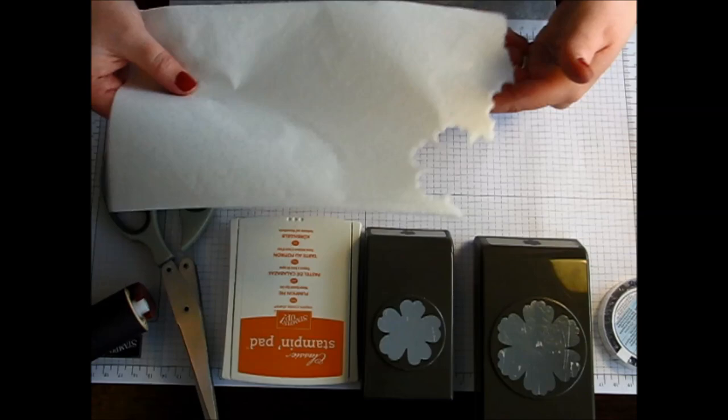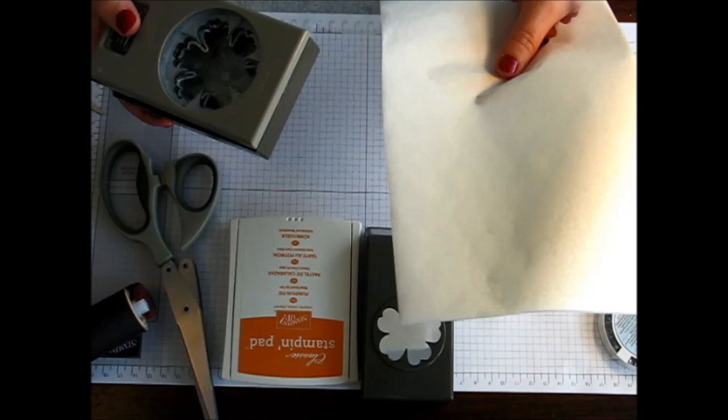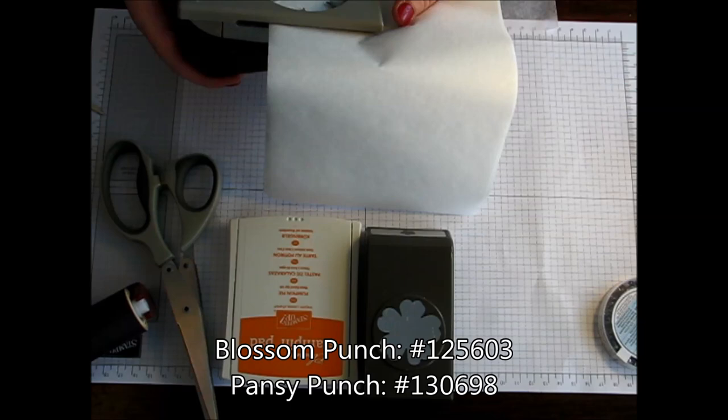I actually have all of the layers here. There's four layers of the rectangle piece. You can see I've already cut a few of them out and I'm going to cut all four layers with my blossom punch here.